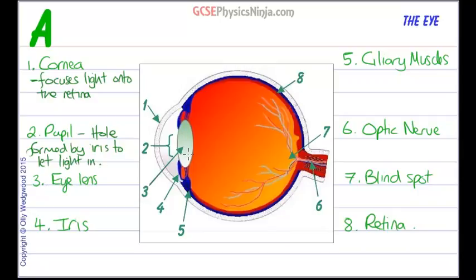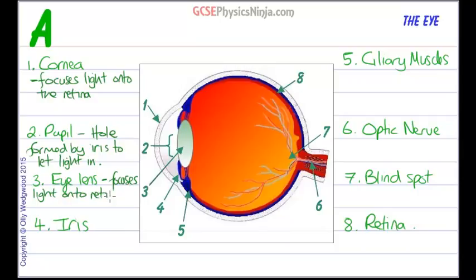Number 3, the eye lens, does a similar job to the cornea. It focuses light onto the retina, but its shape can change, so it is a variable focus lens.